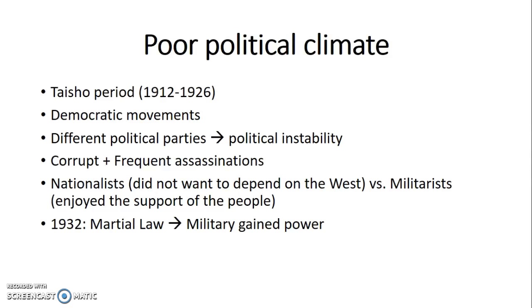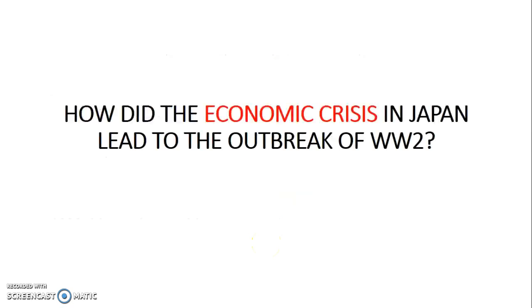Then we must question why Japan had to pursue an expansionist policy instead of depending on their government to solve these issues. At this point there were many different political parties within the government, making it very unstable. The government was also very corrupt with frequent assassinations, so it was unreliable and could not be trusted to solve the economic crisis. So in 1932, martial law was enforced and the Japanese military gained power. Of course, when talking about the outbreak of World War II, you always have to bring in USA and Pearl Harbor, as that was the defining moment when World War II really broke out in the Asia-Pacific region.